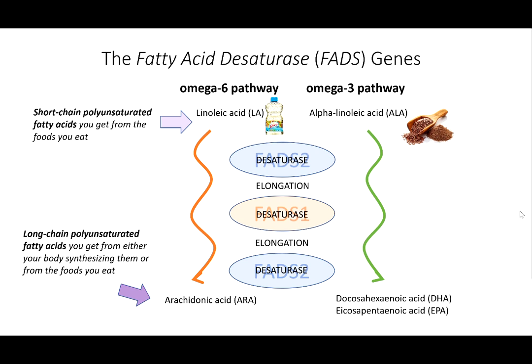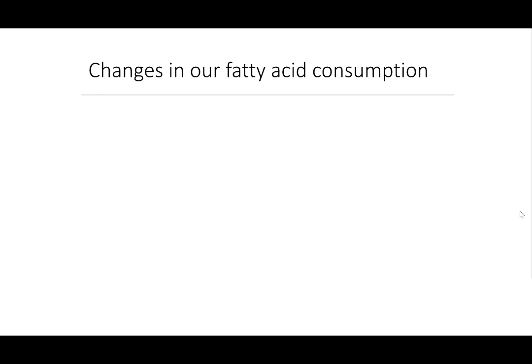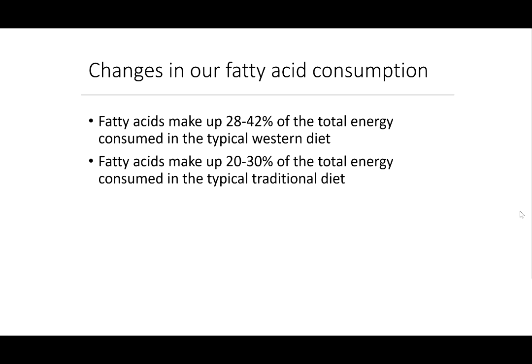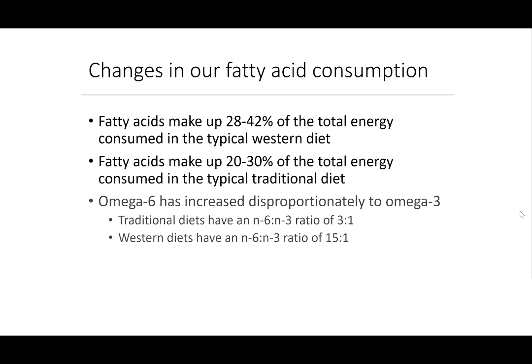As one example of this variation, there has been a dramatic increase in the levels of fatty acid consumption in the Western diet over the last few decades. Here in the United States, for example, you can see this in a comparison of the typical Western diet with that of a typical traditional diet. Fatty acids make up 28 to 42 percent of the total energy consumed in the average Western diet, and just 20 to 30 percent of the total energy consumed in a more traditional diet. Additionally, the proportions of omega-6 and omega-3 vary significantly. Traditional diets have an N6-to-N3 ratio of 3 to 1, and Western diets have an N6-to-N3 ratio of 15 to 1.